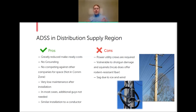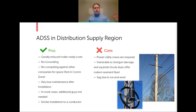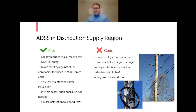The downside of ADSS is that because you're in the supply region, you need either a power utility crew or a certified contractor who can work in the power space. That limits your options somewhat. With so many companies now getting into fiber to the home and federal funding driving demand, everyone is competing for contractors and splicers, which could further limit your options.